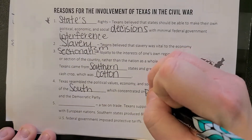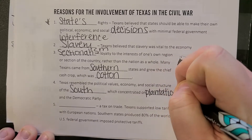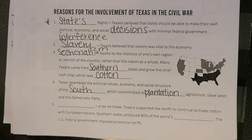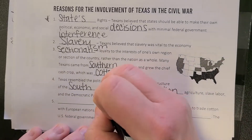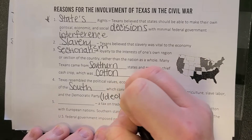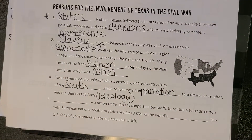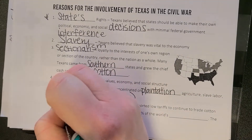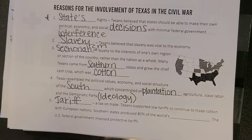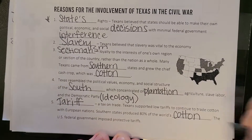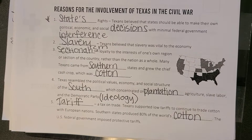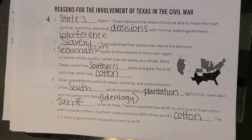Texas was based on plantation agriculture, slave labor, and the Democratic Party. This indicates an ideology, which we'll look at later. Number five is a tariff — the South was creating 80% of the world's cotton, and the federal government was taxing that because they felt it was unethical for the South to have slaves. That's complicated, but we'll talk more about this later on in our unit.